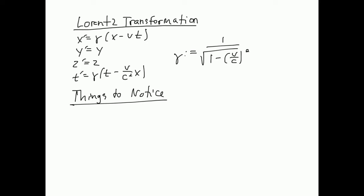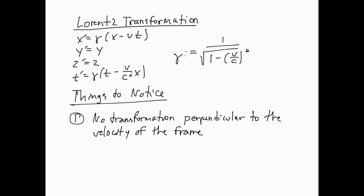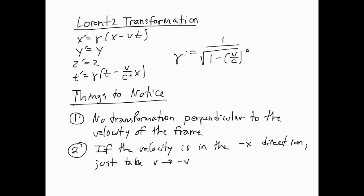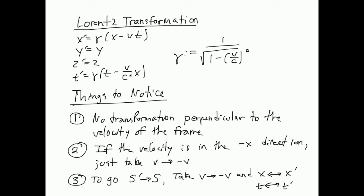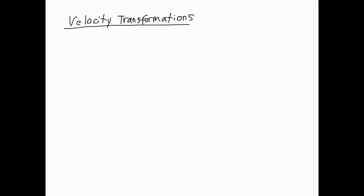A couple of things to notice about the Lorentz transformations: there is no transformation perpendicular to the velocity of the frame — if we're moving in the x direction, the y and z directions do not transform. Also, if the velocity of the frame is in the negative x direction, just change the sign on the velocity. And lastly, these transformations take you from the unprimed to the primed frame. If you want to go from S prime to S — from primed to unprimed — put a negative sign in front of the velocity terms and then exchange primes.